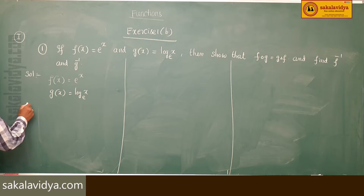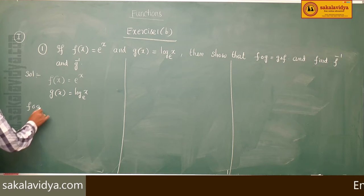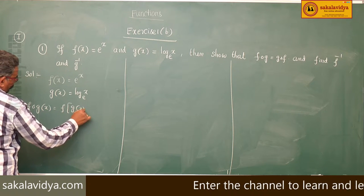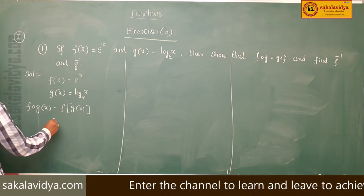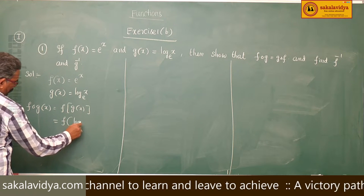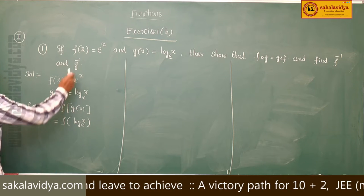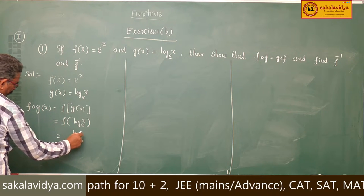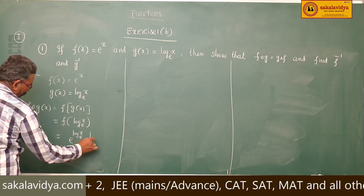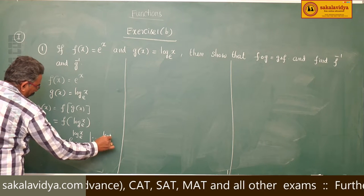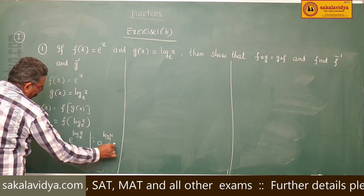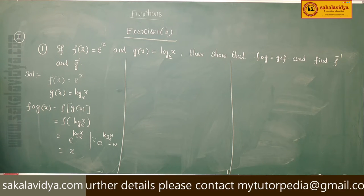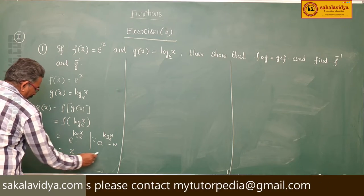First, find f∘g. f∘g(x) = f(g(x)). Since g(x) = log x to base e, we get f(log x base e) = e^(log x base e). Using the logarithm formula a^(log n base a) = n, we get f∘g(x) = x. This is equation 1.